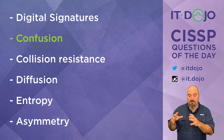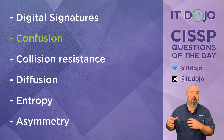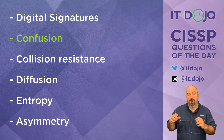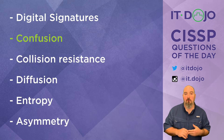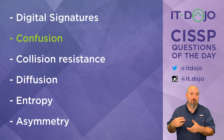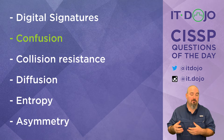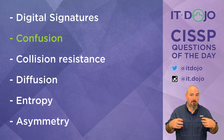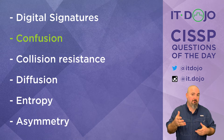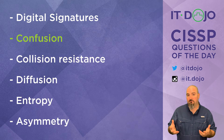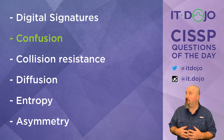Confusion is created primarily by substituting values. If we look at how this is implemented with an algorithm like RC4, you have the key fed into the algorithm to produce a key stream that's then used to substitute one value for another via an exclusive-OR operation. That substitution — just taking one value and substituting it for another — we see in very basic mechanisms like the Caesar shift, and in more advanced implementations like RC4 as a stream cipher.